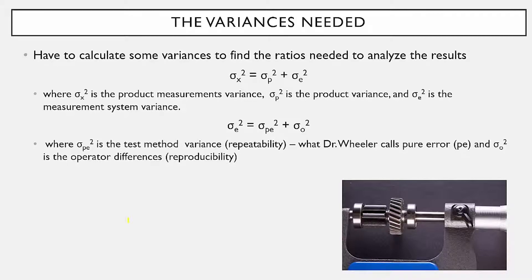If it is consistent and predictable, you can go on and begin to talk about calculating variances, because you're going to use those variances to find ratios needed to quantify the results. Here's the overall equation for variation in a process. We have sigma-x-squared, which is the product measurements variance — the variance of all the product measurements. We have sigma-p-squared, which is the product variance. And then we have the measurement system variance. So total variance equals product variance plus measurement system variance.